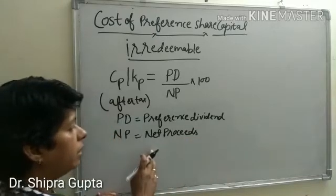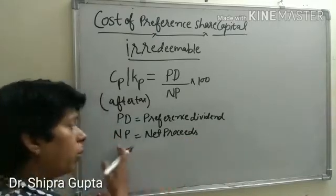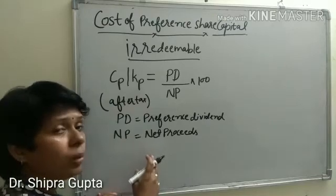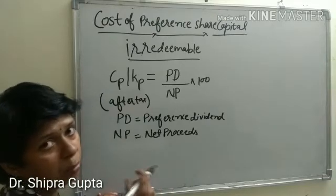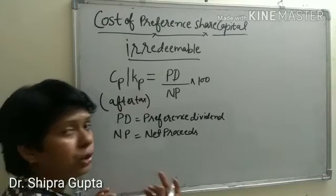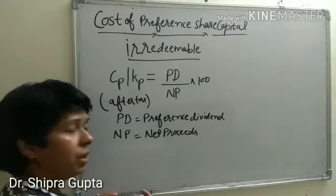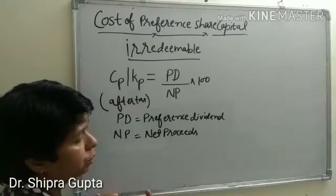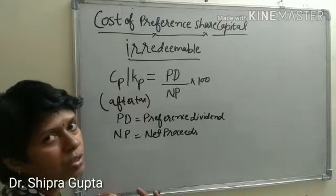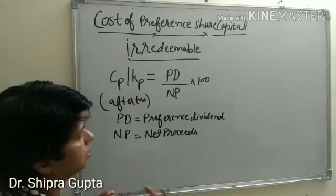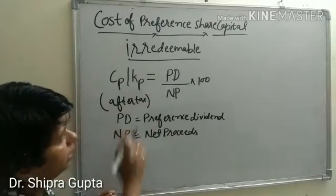We have already taught you about Np. Net proceeds equals face value, plus premium at the time of issue if any, minus discount at the time of issue, minus flotation cost or cost of issue expenses. We calculate this first.